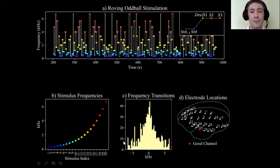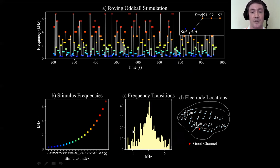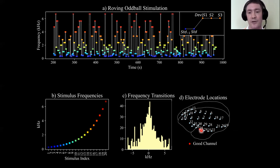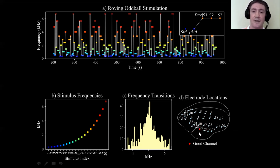It's important to have balanced frequency transitions in such an experiment. If there was an imbalance — like if we had just high frequency transitions going towards one side — that might affect the results. Panel D shows the electrode locations positioned on a grid across one hemisphere of the cortex. The auditory cortex was located around this region, and channel 25 was identified as showing particularly robust auditory responses.